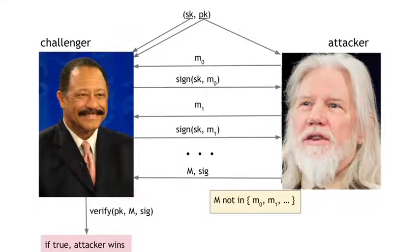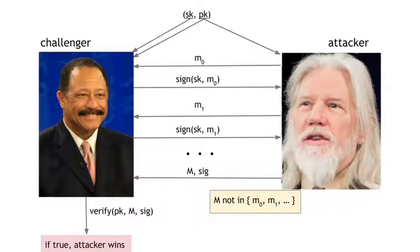This game defines what it means for a digital signature scheme to have the unforgeability property. To be precise, we say the attacker's probability of winning this game is negligible, and that this holds no matter what algorithm the attacker uses. A signature scheme is unforgeable if no matter what algorithm the attacker uses, he has only a negligible chance of successfully forging a message. Combined with the easier property that valid messages verify, we have a suitable digital signature scheme.